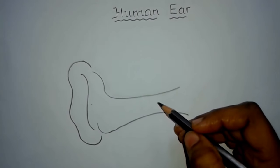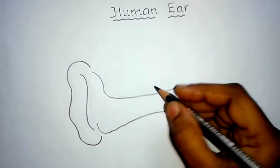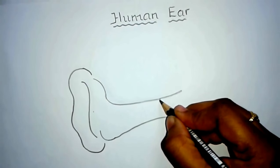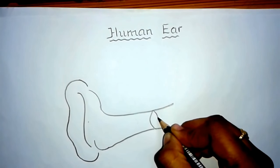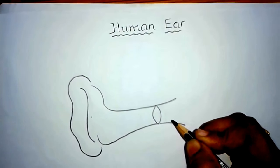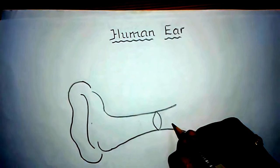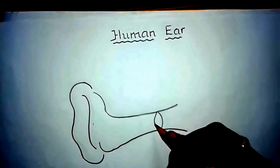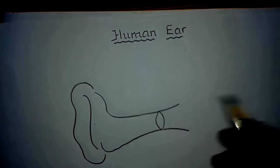Now draw the important part of the outer ear, that is the tympanum, which is also called the eardrum. This tympanum separates the external ear from the middle ear, and sound waves make the tympanum vibrate.